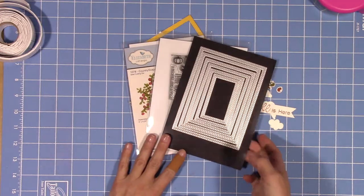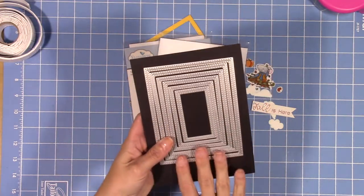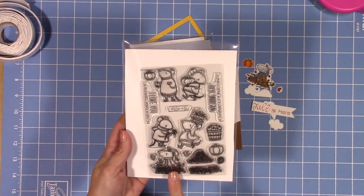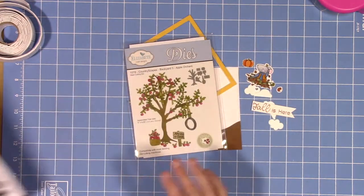Hi guys! So for my next card in my fall card series I'm going to be using the Harvest Mouse stamp set by My Favorite Things and the dies.